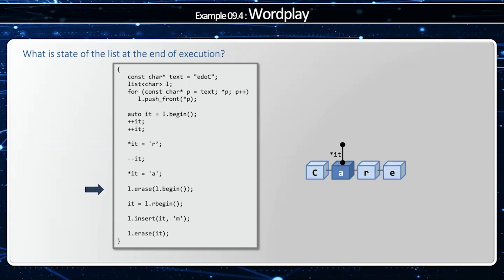Now I can erase a given element in the list by passing an iterator to the item to be erased. And which element am I going to erase? The begin element. I can also access the last element with the rbegin iterator.